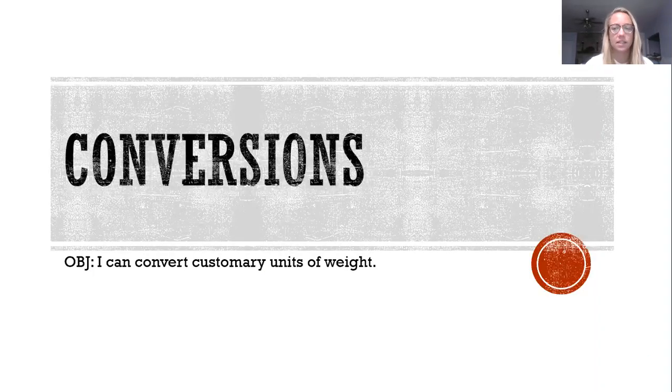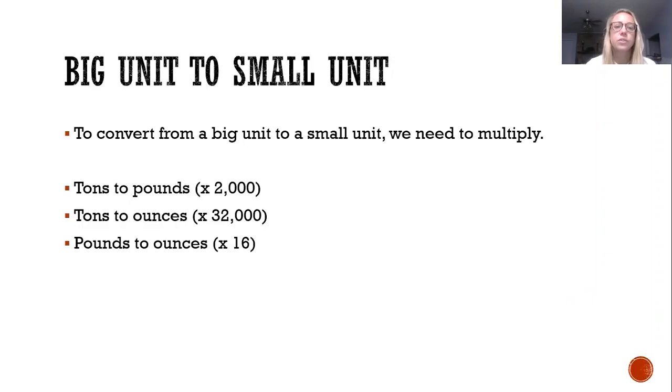Okay, because this is the important part: conversions. When you're converting a unit, you're going either from a smaller unit to a bigger unit or from a bigger unit to the smaller unit. It's a pretty simple concept but it takes a lot of practice to become really good at it. So if you're going from a big unit to a small unit, like tons to pounds, tons to ounces, pounds to ounces, or kilograms to grams, you need to use multiplication.